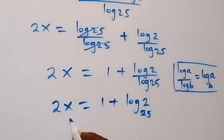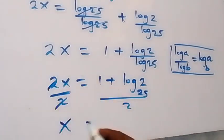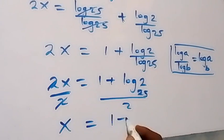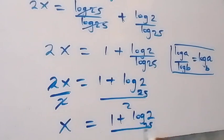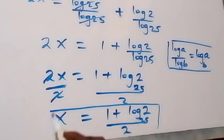Since we are finding x, divide both sides by 2. This equals 1 plus log 2 base 25, over 2. So the solution to this problem is 1 plus log 2 base 25, all over 2.